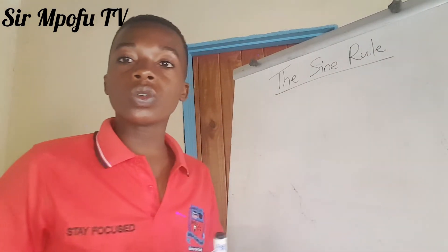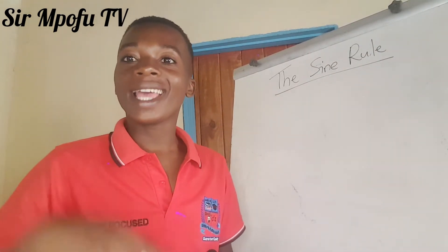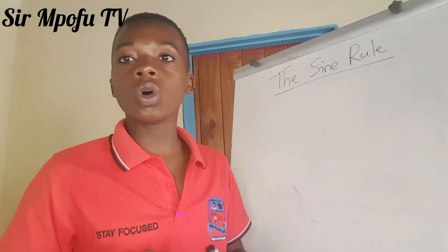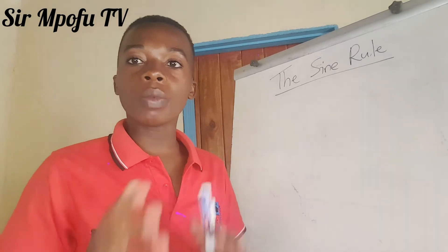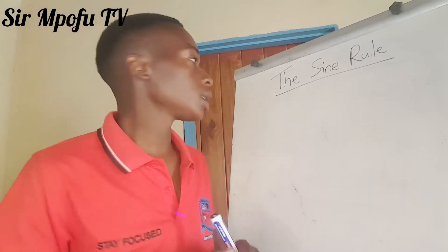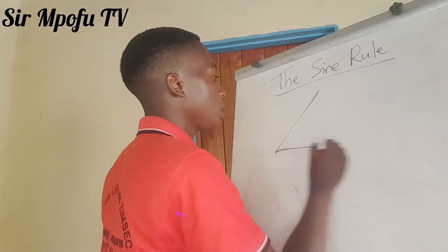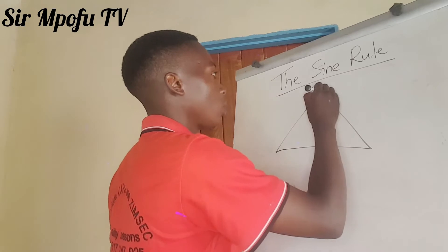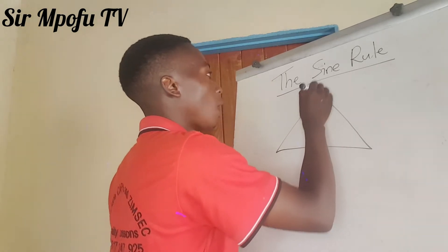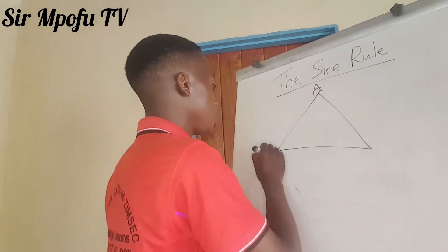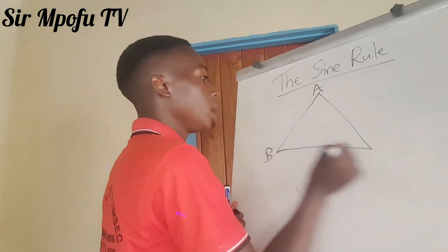We use it to find either a side or an angle. I'm going to give you the formulas. Let's say we have got this triangle. This is our A, this is our B.